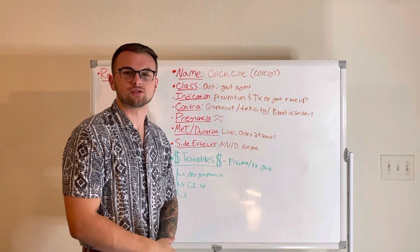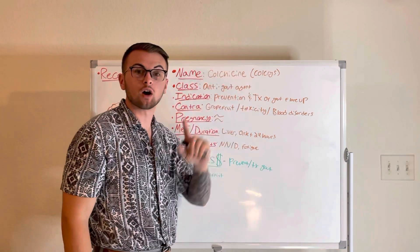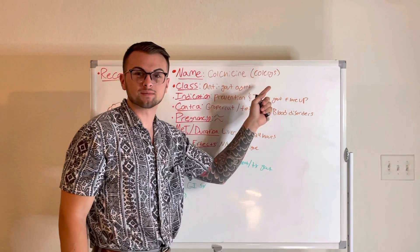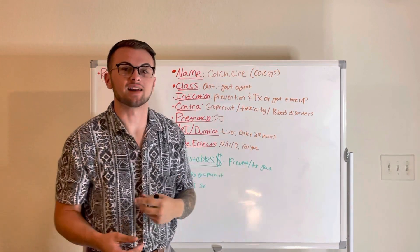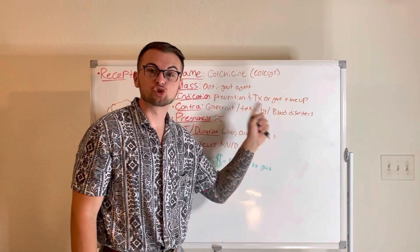Hello everyone and welcome back to Clinical Cousins YouTube channel, where today we're going to go over the drug colchicine, also known as Colcrys. This drug is classified as an anti-gout agent and is given for the prevention and treatment of a gout flare-up.